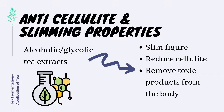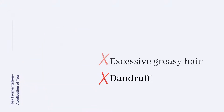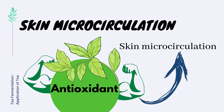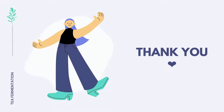Next, tea is also used for its anti-cellulite and slimming properties, where it maintains a slim figure, reduces cellulite, and removes toxic products from the body. Moreover, it is also used for skin care where it reduces increased sebum production. It is also used for excessive greasy hair and dandruff. Finally, it is also used to improve skin microcirculation due to its strong antioxidant properties that have a protective activity.